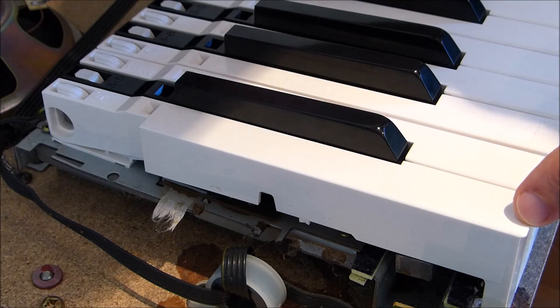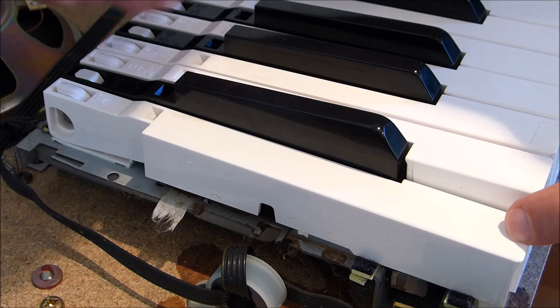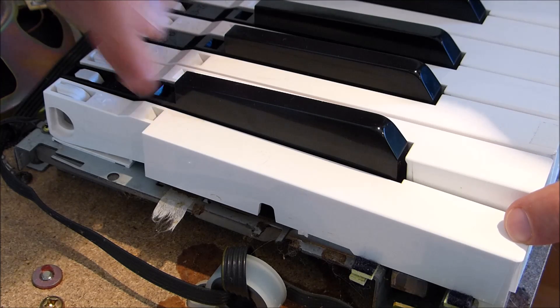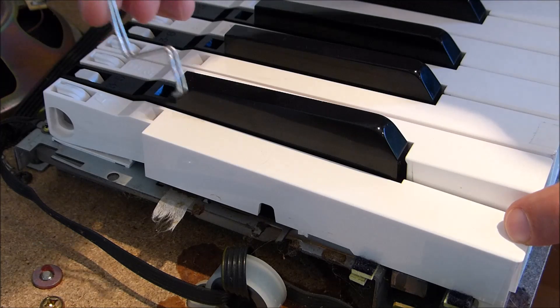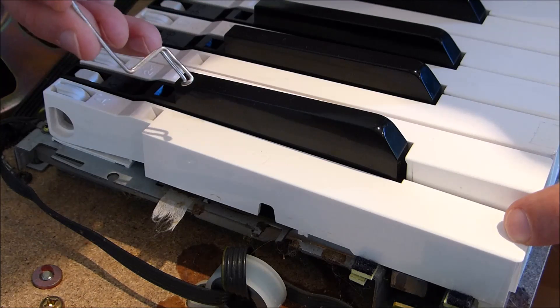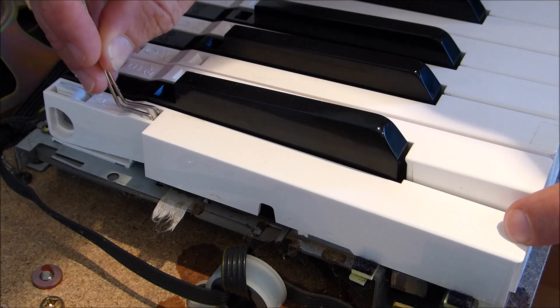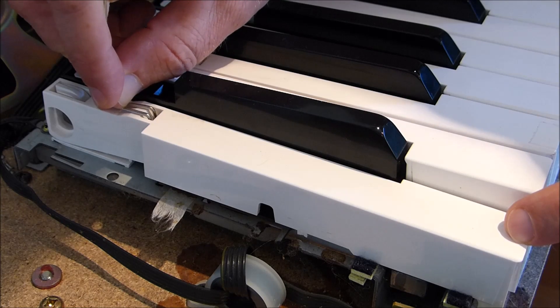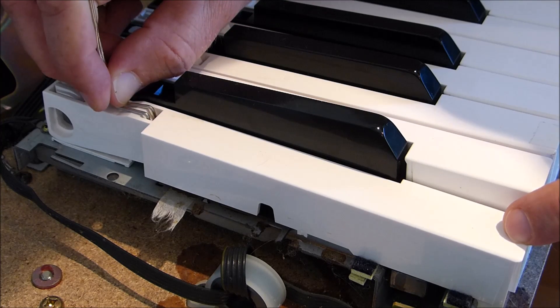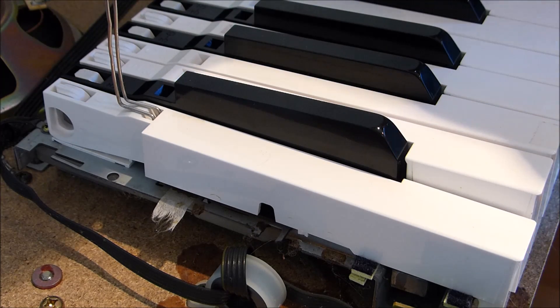The first step to remove the key is to press the key down and you'll see a little hole towards the back of the key. What you need to do is put your key remover tool into the slot and it should slip underneath a small latch. If you got it correctly and the key works, you should be able to remove your fingers and the key should stay down.